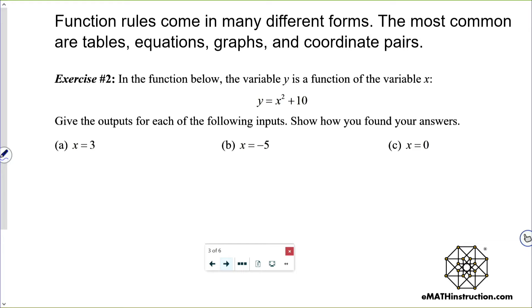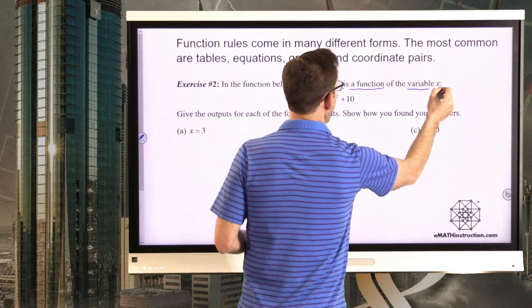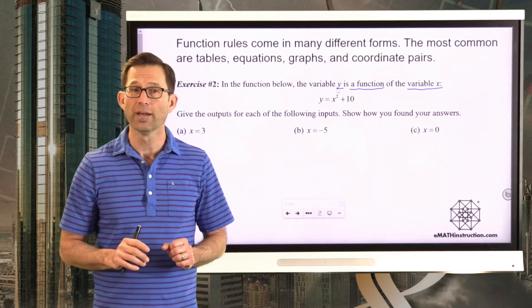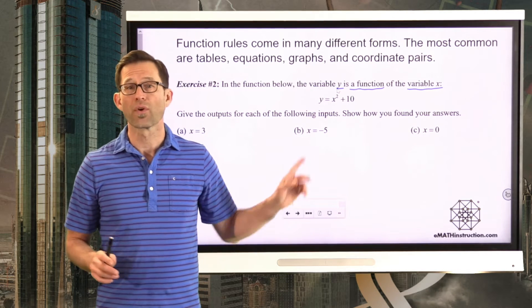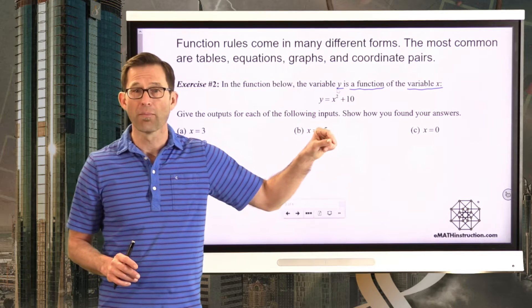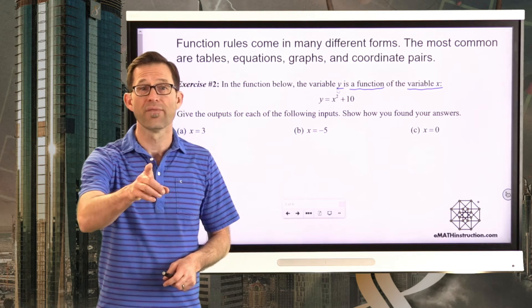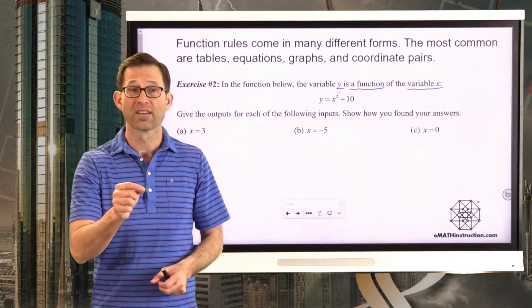Exercise number two. In the function below, the variable y is a function of the variable x. y equals x squared plus 10. Give the outputs for each of the following inputs. Show how you found your answers. Now, again, I want to be very clear. This phrase, y is a function of x, whatever is the function is the output. So y is the output. And of the variable x, the x is the input. Now, honestly, with equations, almost always, it's solved for the output. So if I have y equals x squared plus 10, then it makes a lot of sense that what's going to go into the equation is the value of x. We're going to use that formula then to calculate the value of y.